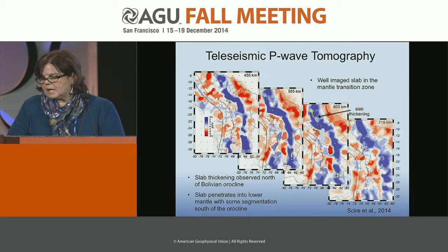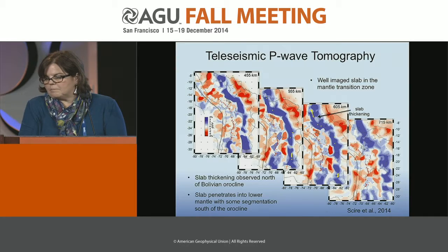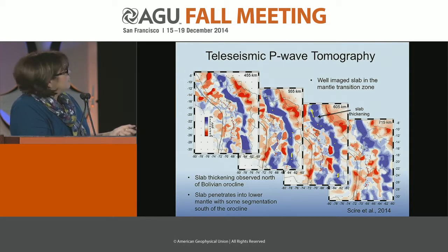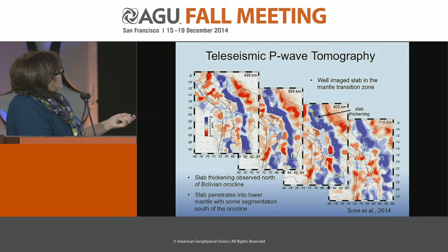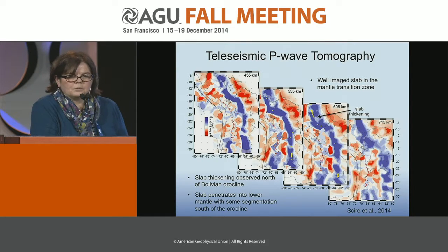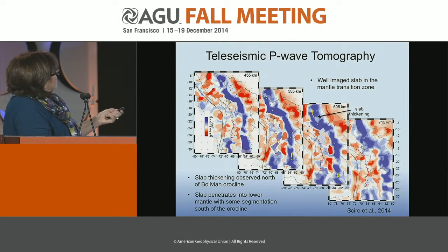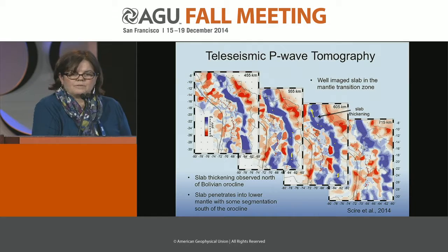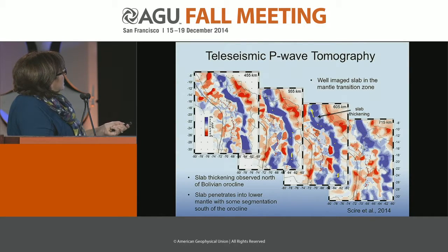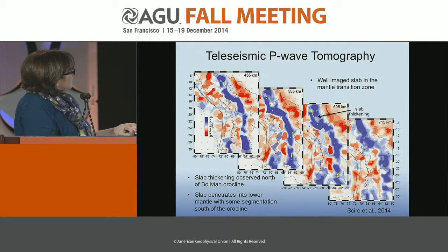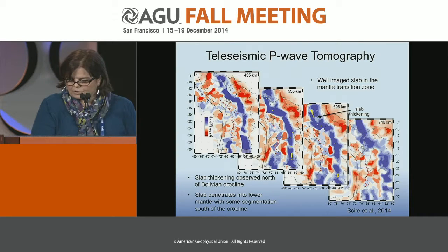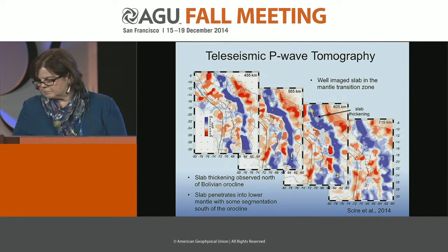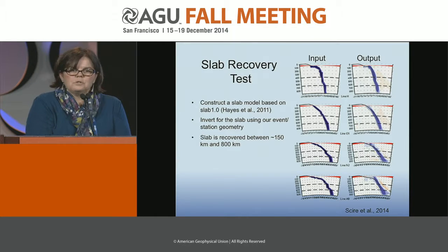Deeper map views of the P-wave tomography from 455 to 715 kilometers show a fairly nice high-velocity slab anomaly throughout. North of the bend the slab looks a little more thickened and perhaps more segmented than to the south. At 715 kilometers, once we've crossed into the lower mantle, we still see a fairly well-defined slab, although it's broader.